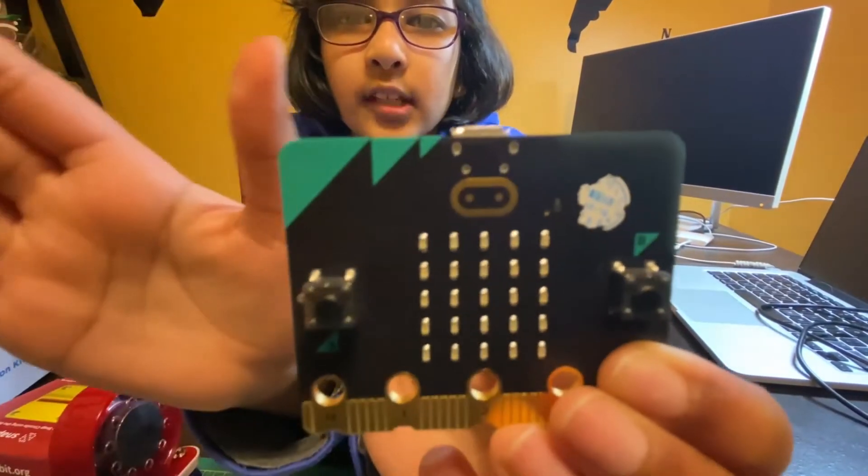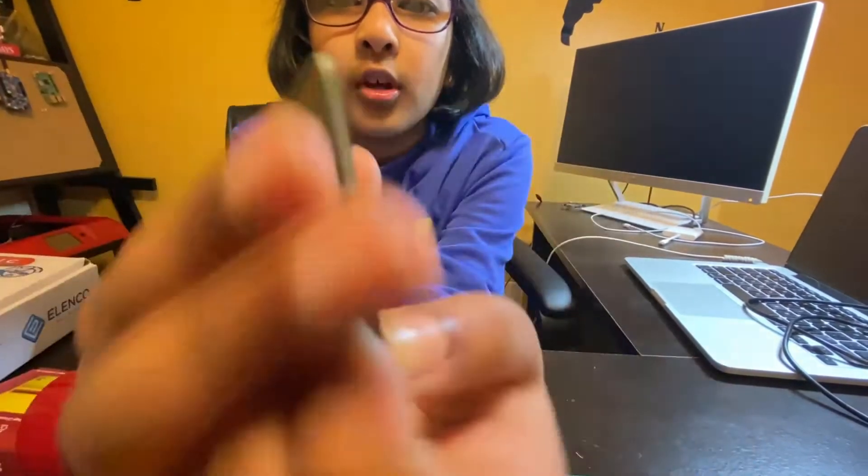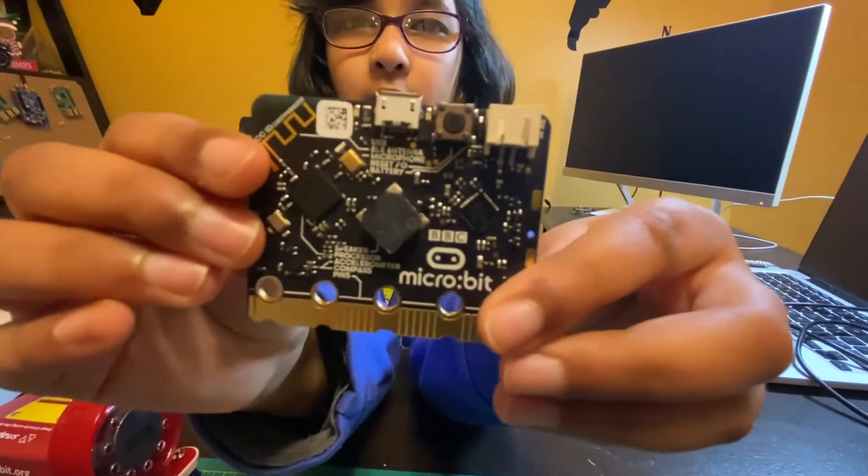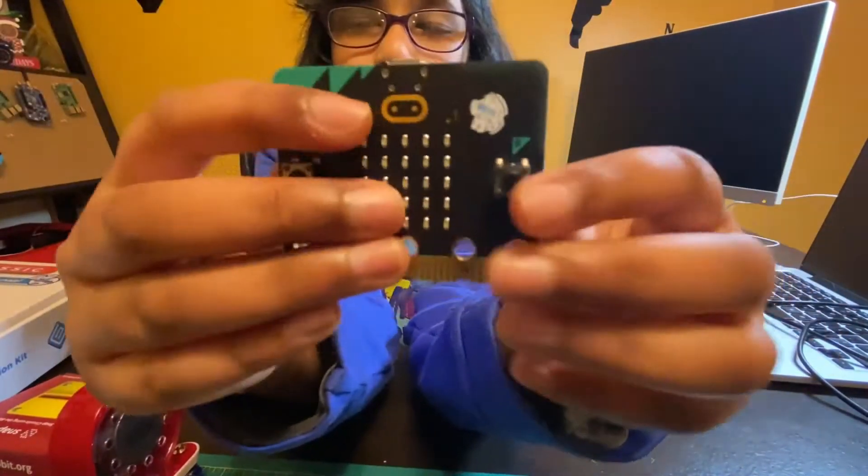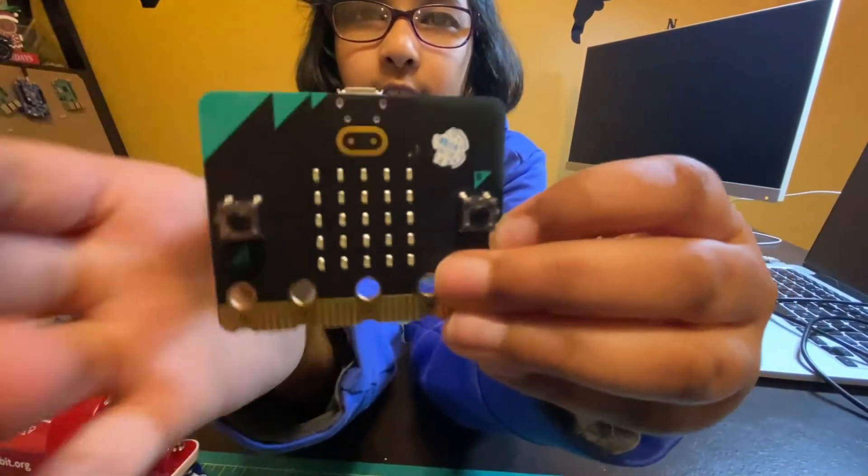It has all the sensors from the previous version, along with a speaker and microphone, and in the front, a touch sensor in the icon.